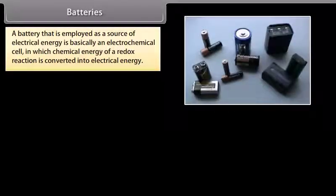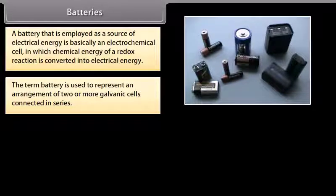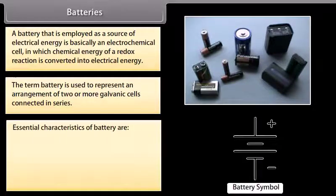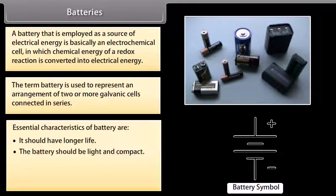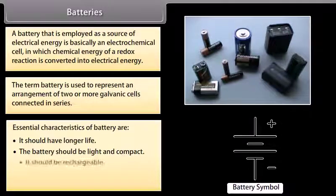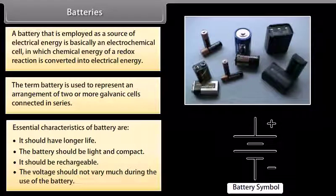Batteries: A battery that is employed as a source of electrical energy is basically an electrochemical cell in which chemical energy of a redox reaction is converted into electrical energy. The term battery is used to represent an arrangement of two or more galvanic cells connected in series. Essential characteristics of battery are: It should have longer life, the battery should be light and compact, it should be rechargeable, and the voltage should not vary much during the use of the battery.